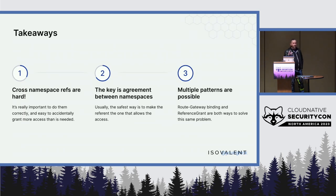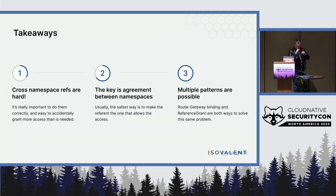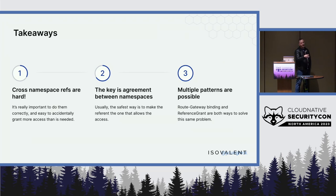Cross-namespace references are hard — really hard. It's really important to do them correctly but really easy to get them wrong. The key thing is just that agreement between the two parties — making sure you have agreement between the two parties is the right thing to do. Multiple patterns are definitely possible to do this sort of crossing trust domain relationship. We've already got two examples today: the gateway/HTTP route mapping and reference grant itself.